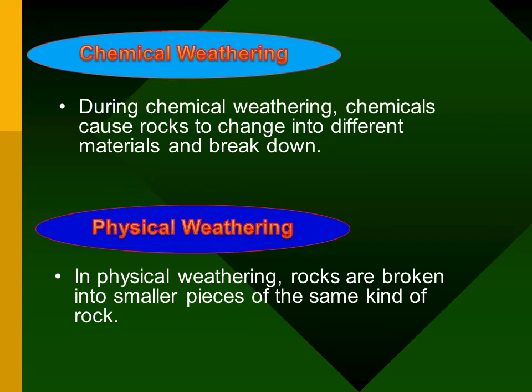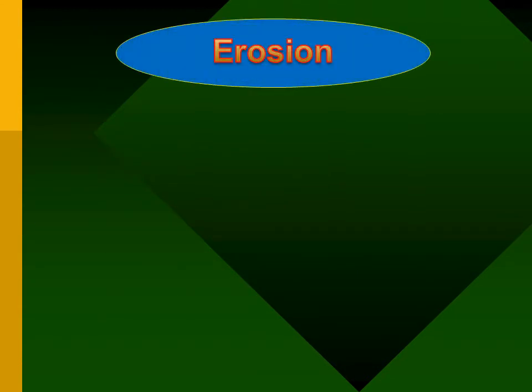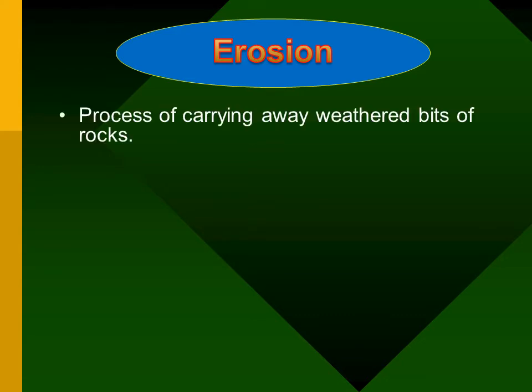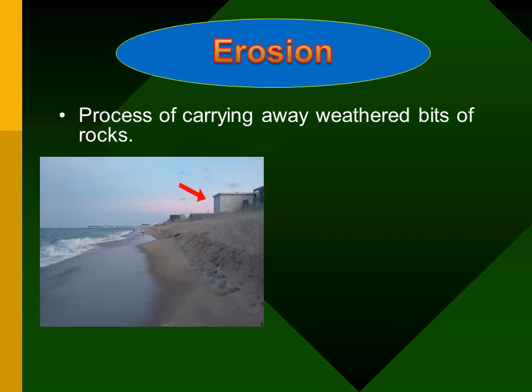Now, what happens after the rock breaks down? It moves from one place to another. We call this process erosion — the process of carrying away weathered material or weathered bits of rock from one place to another is called erosion.